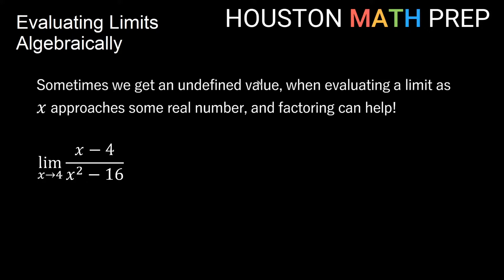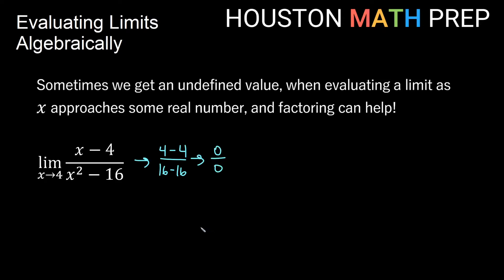Sometimes we get an undefined value when approaching an x value that is not well behaved. When we can't plug in, we need other methods. For example, the limit as x approaches 4 of (x - 4) / (x² - 16): plugging in 4 gives (4-4)/(16-16) = 0/0, which doesn't tell us anything about what this limit is.